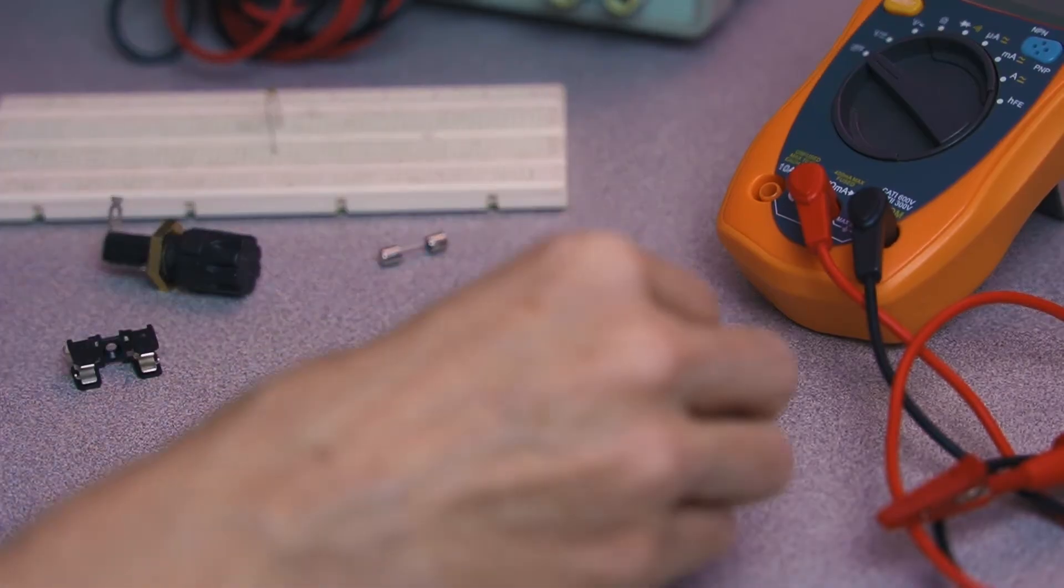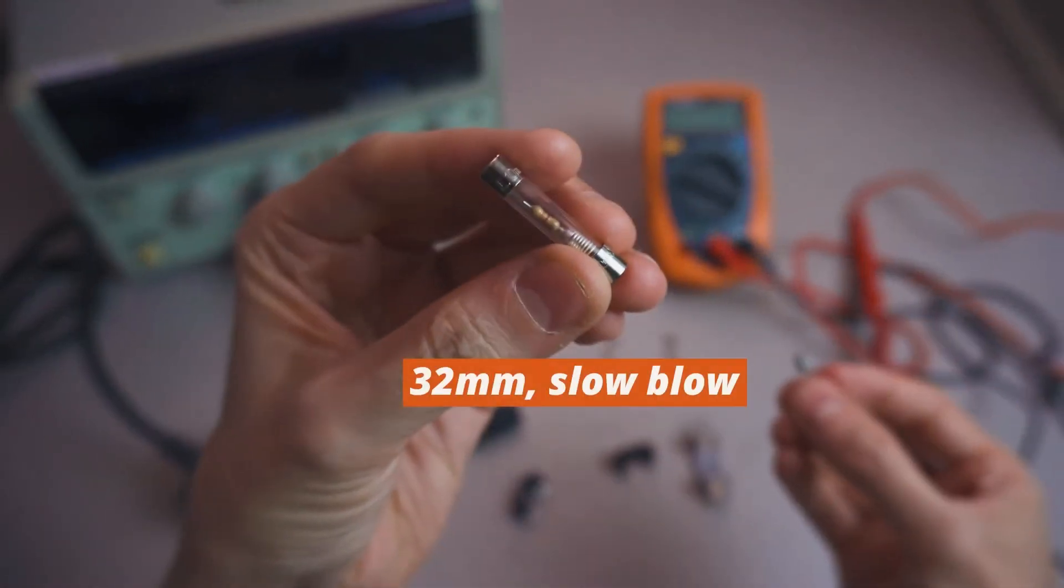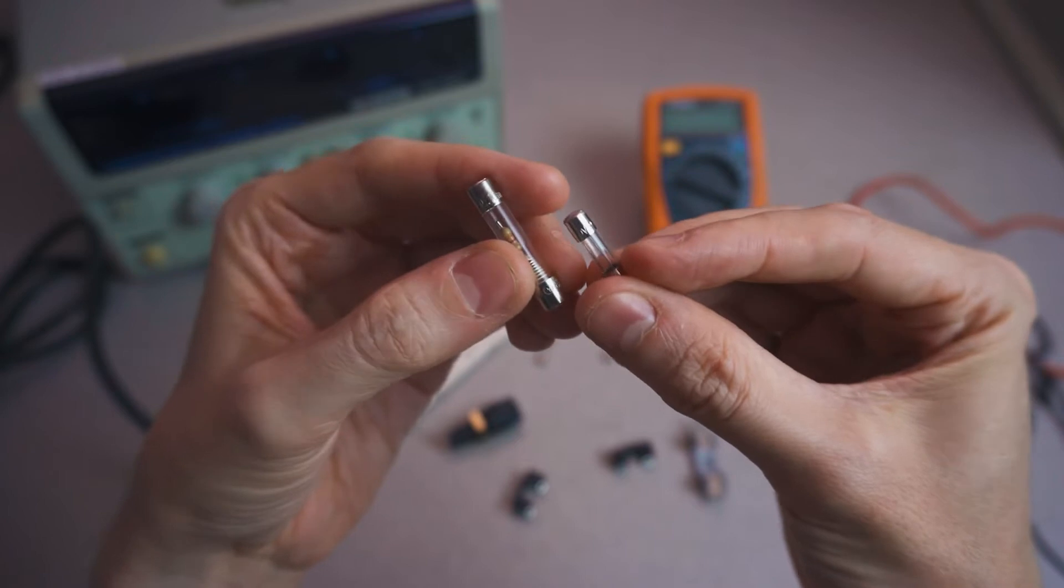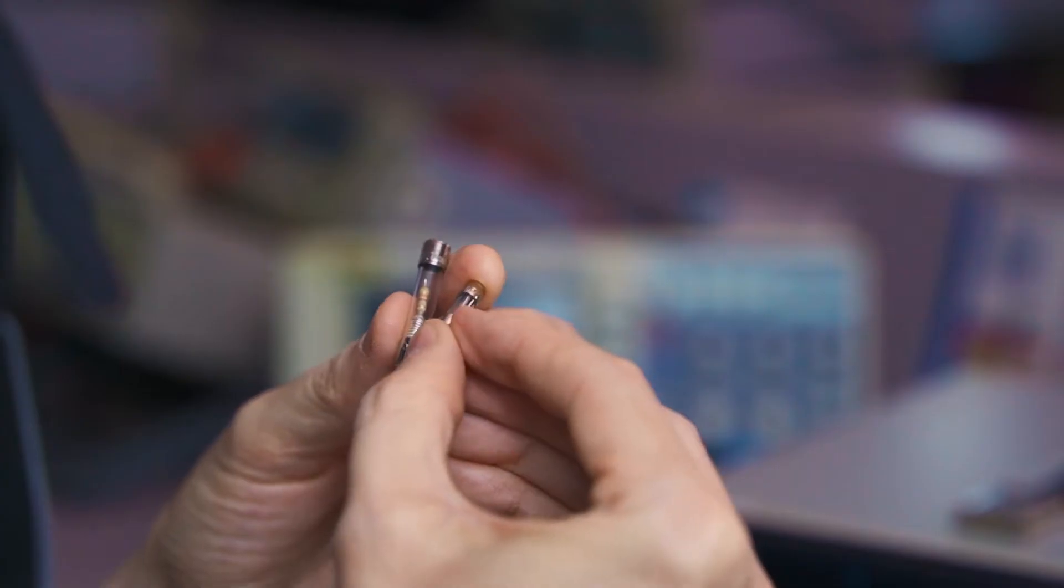There are two common sizes for these small cartridge fuses. This one is 32 millimeters long, and the smaller one here is 20 millimeters long, and the 20 millimeter size is a little bit more common.